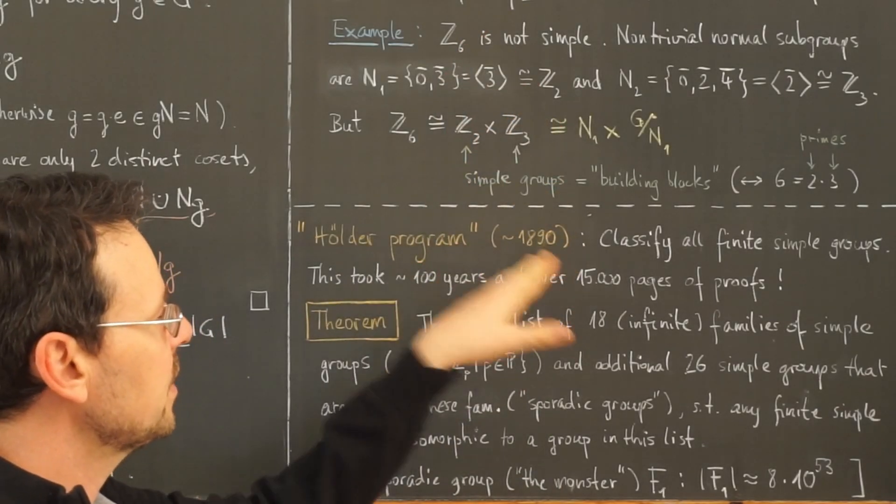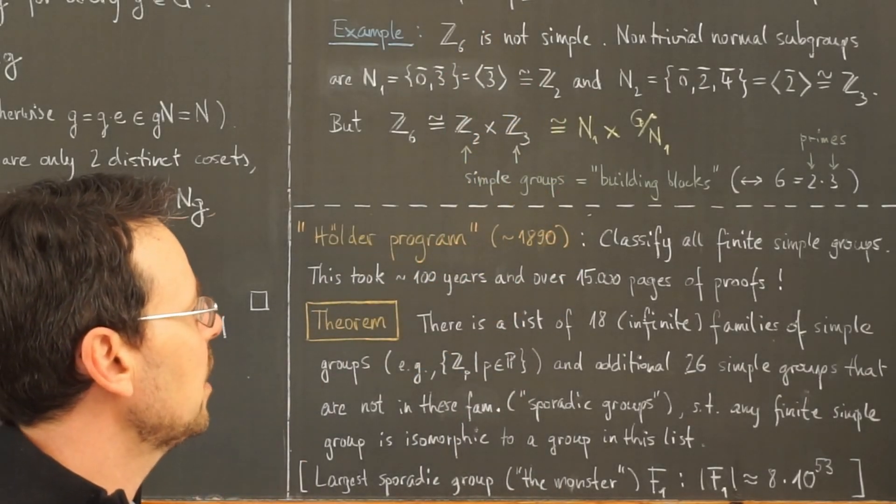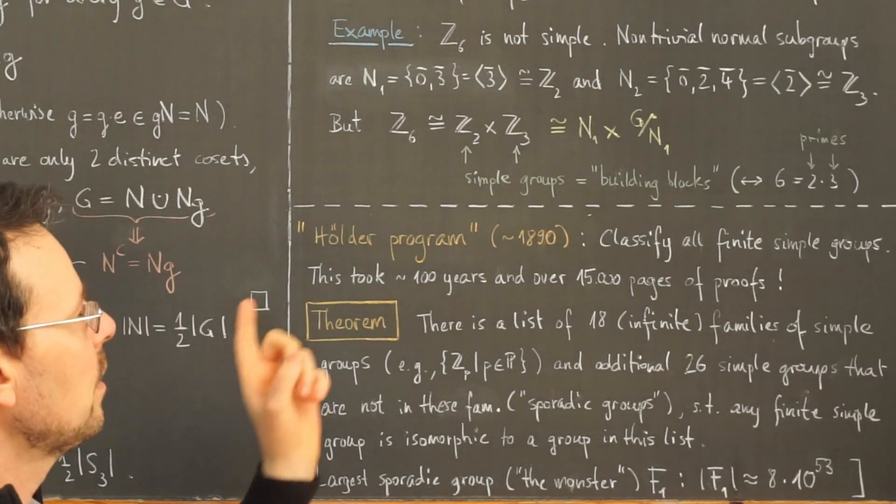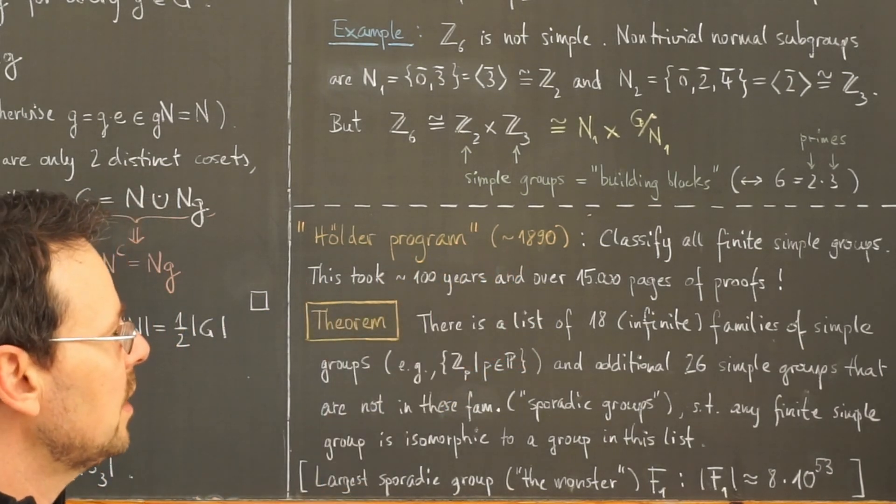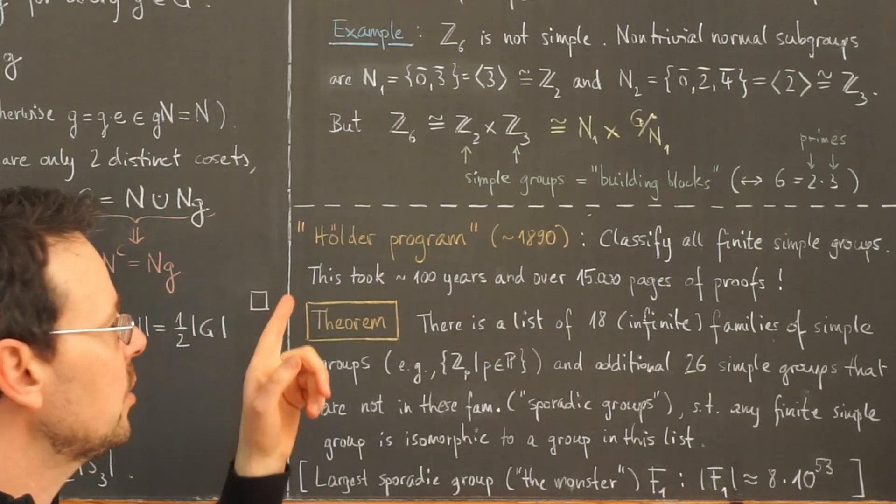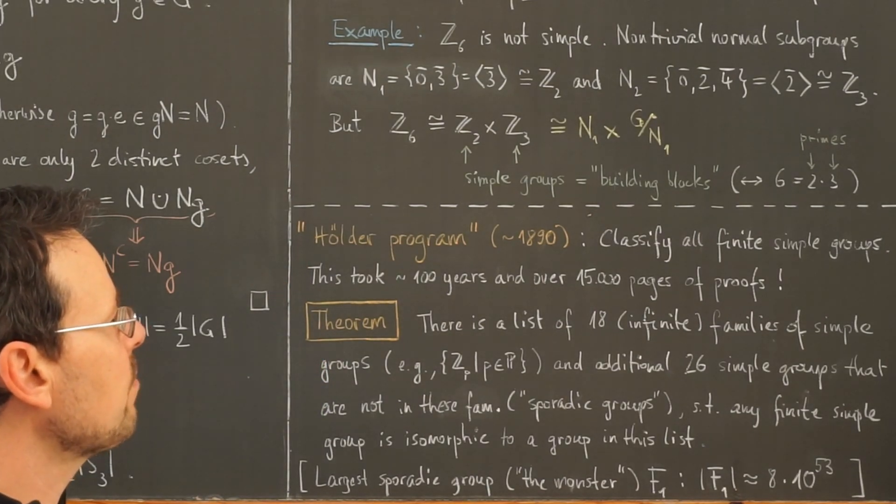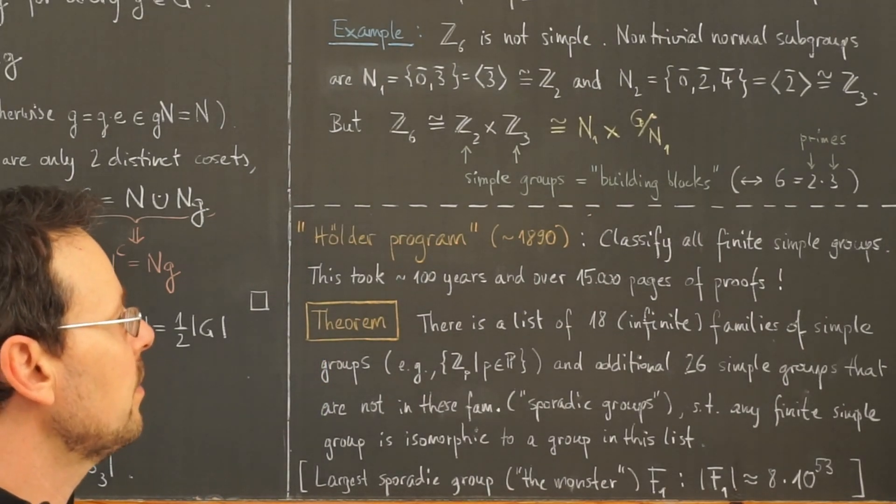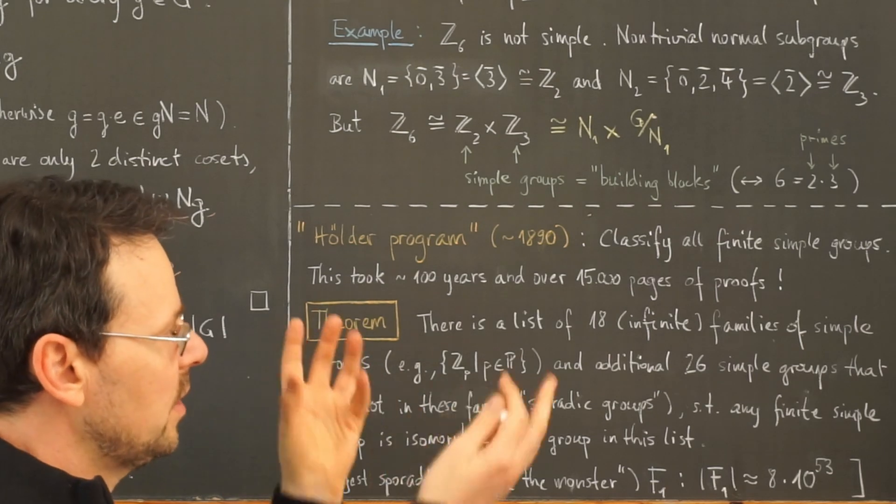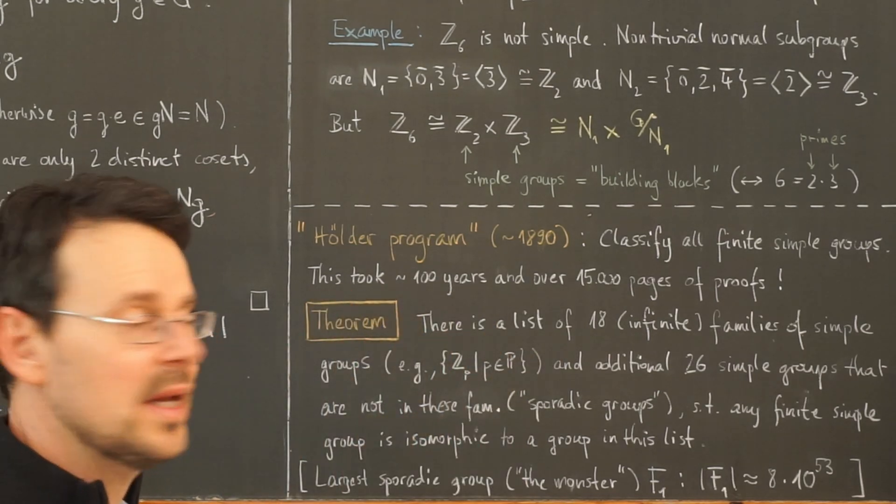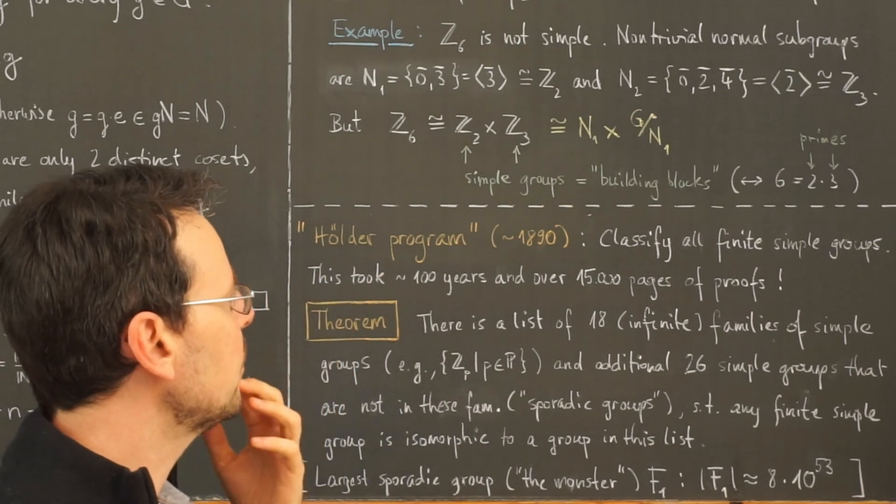Okay, this here brings us to a very interesting outlook. In the late 19th century, a German mathematician named Otto Hölder started the following program, or said, this needs to be done. This is called the Hölder program.